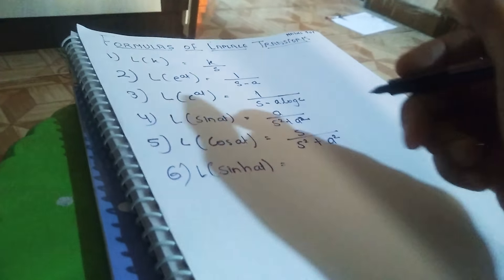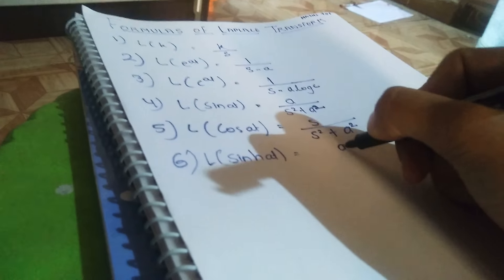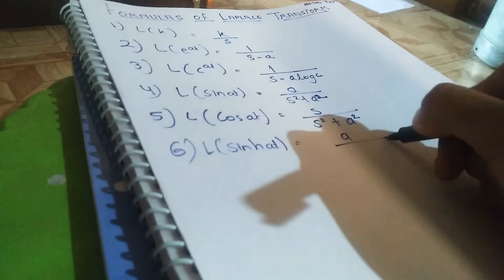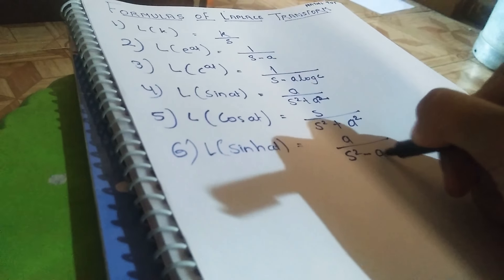The next is Laplace of sine hyperbolic at, which is a by s square minus a square.